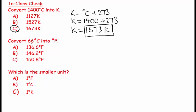It says 66 degrees C into degrees F. The conversion is degrees Fahrenheit equals nine over five degrees Celsius plus 32. So this equals nine over five times 66 plus 32.